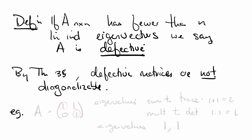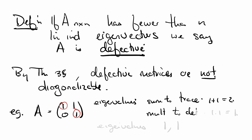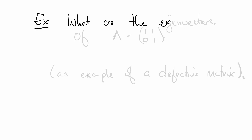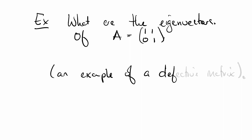An example of a defective matrix is the matrix [1, 1; 0, 1]. The eigenvalues are going to sum to the trace, which is 1 plus 1, and multiply to the determinant, which is 1 times 1, which is 1. It follows that the eigenvalues are 1 with multiplicity 2 — so 1 and 1. Now, here's an exercise for you: what are the eigenvectors of A = [1, 1; 0, 1]? This should be an example of a defective matrix.